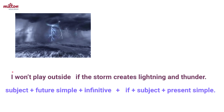Because the result clause is first, it's the subject plus the future simple verb plus the infinitive form. Now, we don't need a comma, so after this it's "if" plus the subject plus the verb in the present simple tense. Remember: the present simple verb is in the "if" or condition clause, and the future simple verb is always in the result part of the sentence.